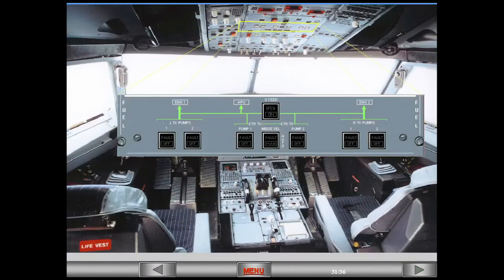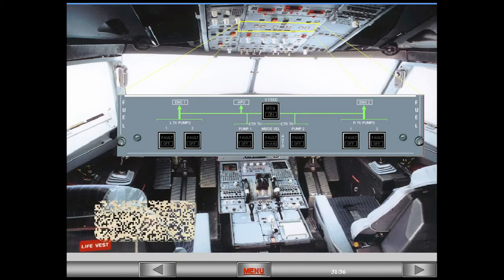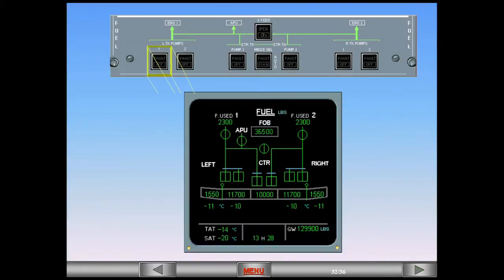The fuel panel is located on the overhead panel. Each wing tank pump is controlled by its associated push-button switch on the fuel panel.